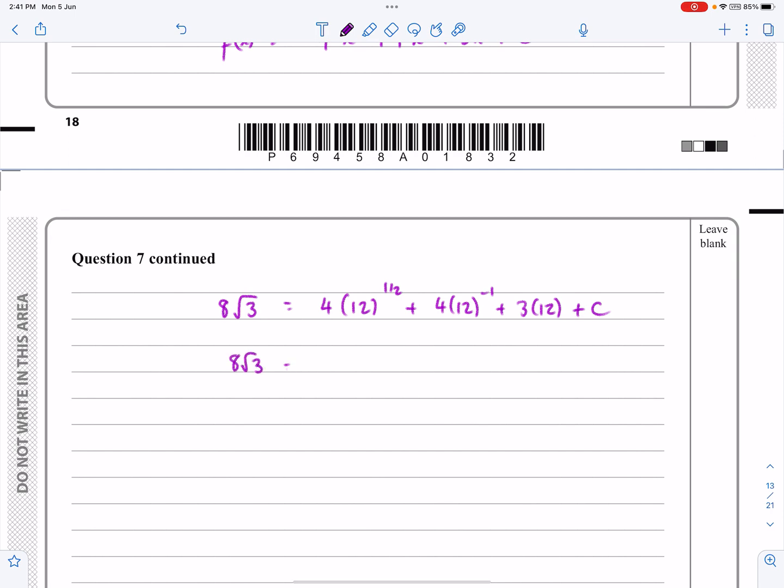So if we do that, we get 8√3 equals, no problem with you doing all these things on the calculator. You do the square root of 12, works out to be 2√3, times by 4, that's going to give me an 8√3. They're going to cancel in a second. And I get 4 over 12, which is a third, I get 36, and I get plus c.